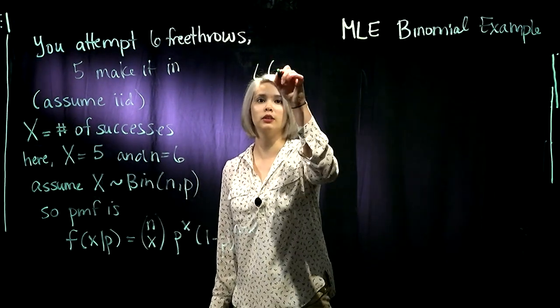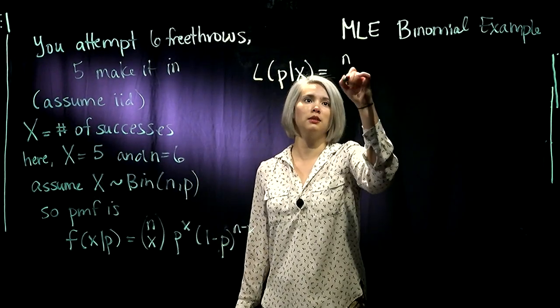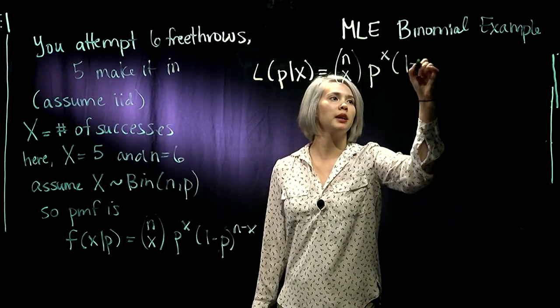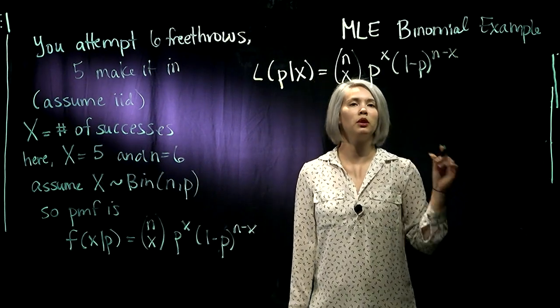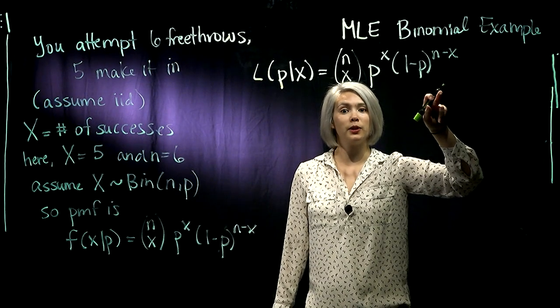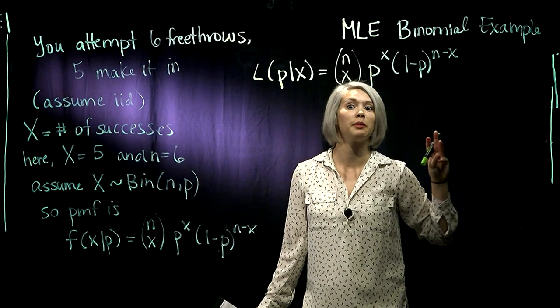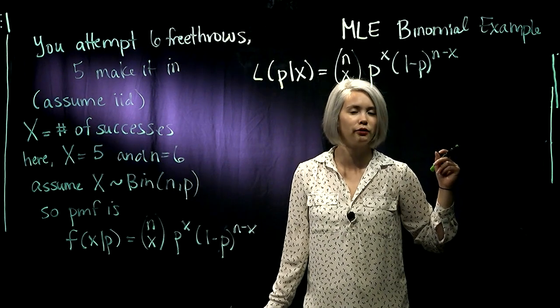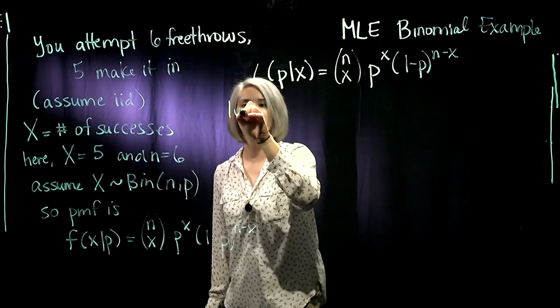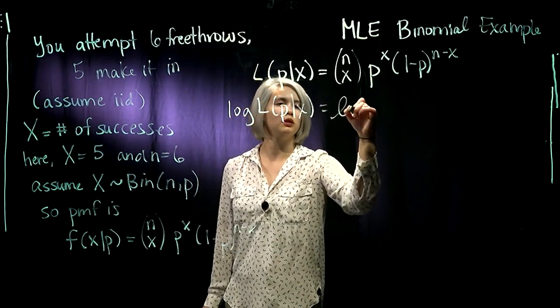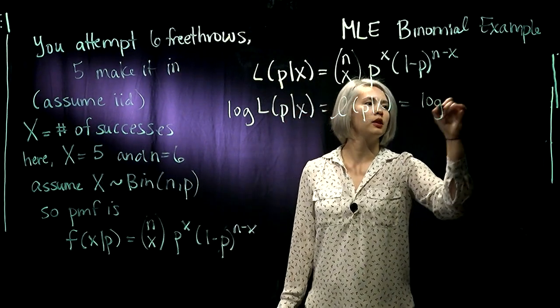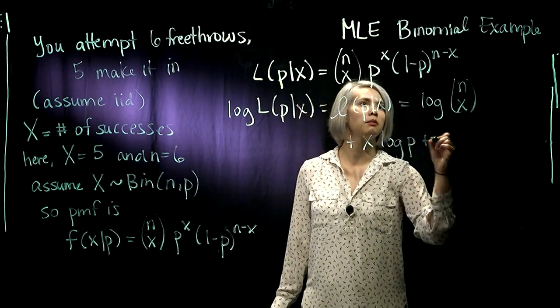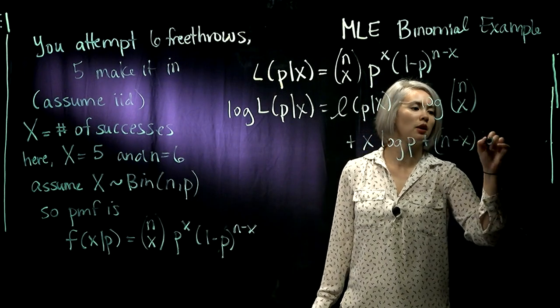If we're doing maximum likelihood, we need to maximize this likelihood function, but it's a lot easier to take the log and then maximize that, because maximizing the log of a function is the same thing as maximizing the function itself since log is a monotone transformation. So our log likelihood, we have the log of n choose x plus x log p plus n minus x times log of 1 minus p.